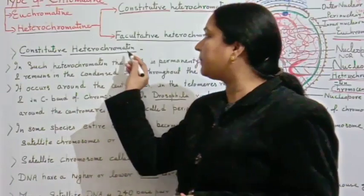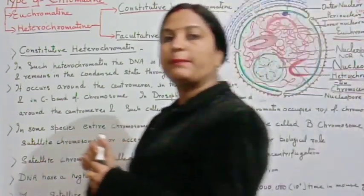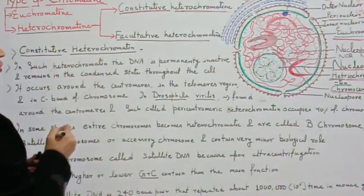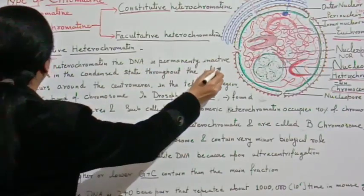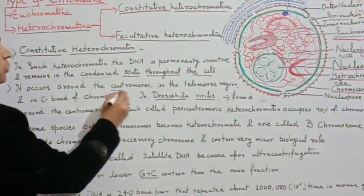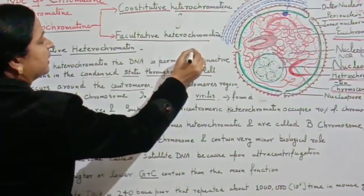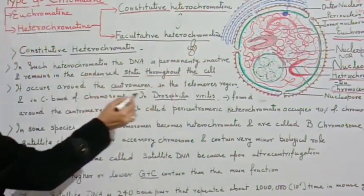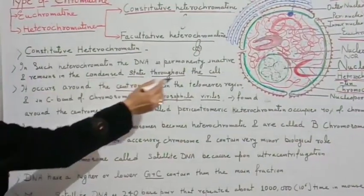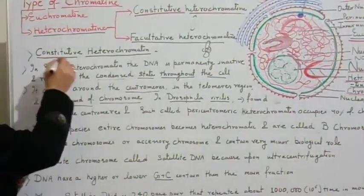Now we study constitutive heterochromatin. In this type, the DNA is permanently inactive and remains in the condensed state throughout the cell cycle. It occurs around the centromere, in the telomeric region, and in the C band of chromosomes — these will all be constitutive heterochromatin regions.